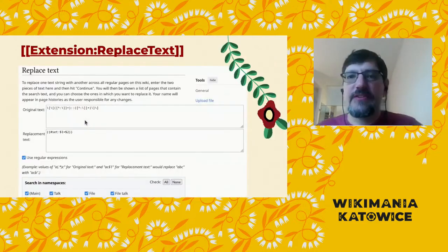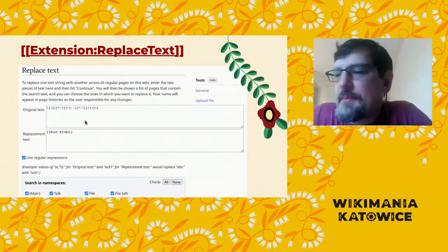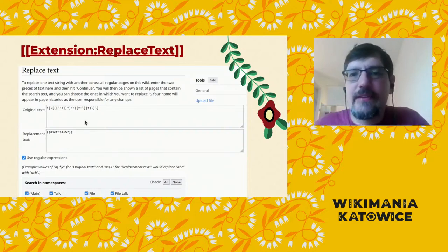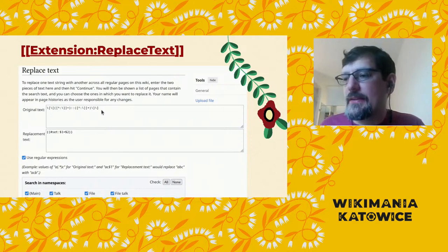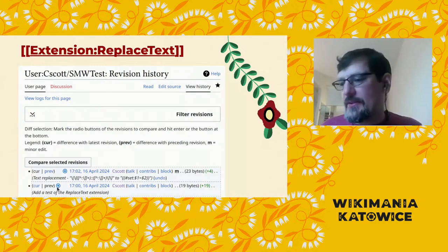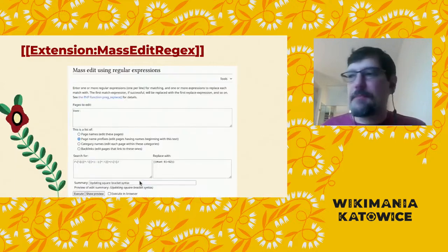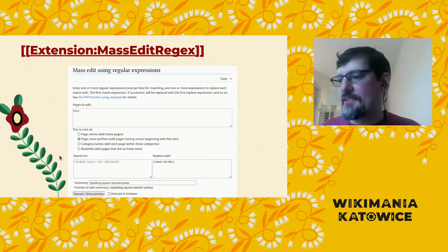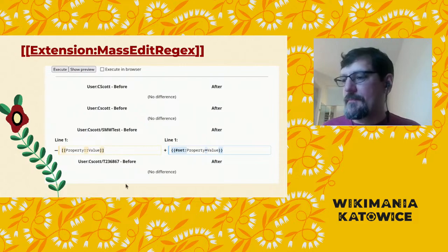There are also automated tools which are extensions native to MediaWiki. These aren't used on any WMF wikis, as far as I know, but they are used by third-party wikis. One is called ReplaceText — this is what it would look like to replace a square bracket sequence with the equivalent with curly braces. The Mass Edit Regex extension is almost identical to ReplaceText on the user side, but has different underlying technology choices which make it more compatible with most wikis. It shows the proposed edit right there in a preview, which is quite nice.